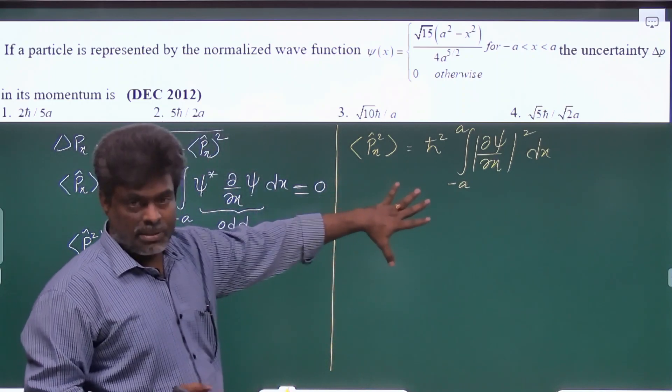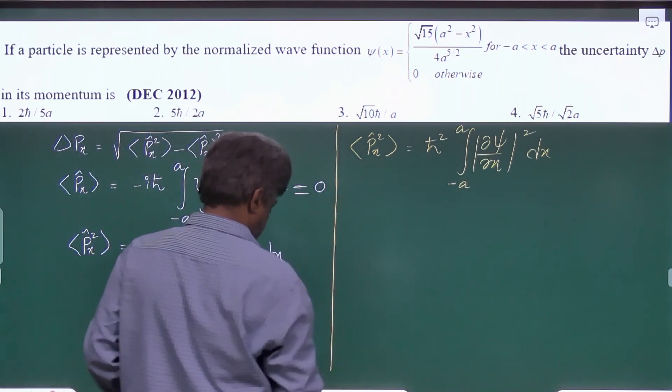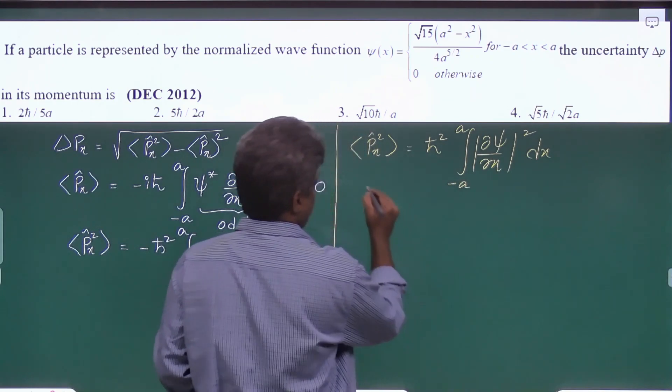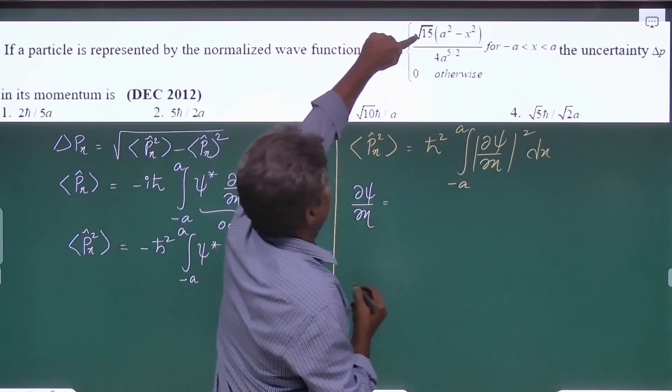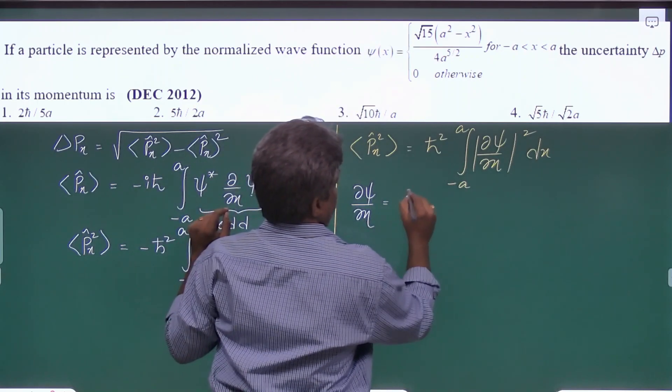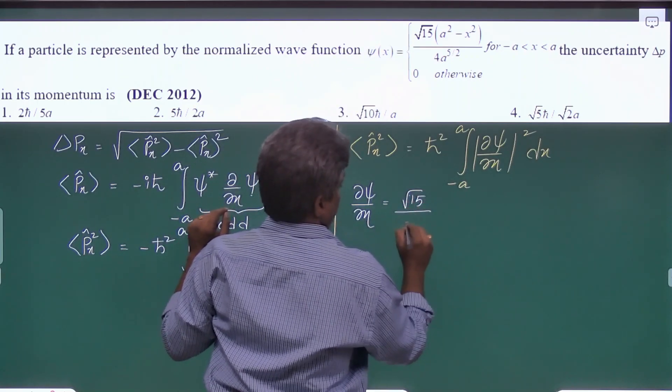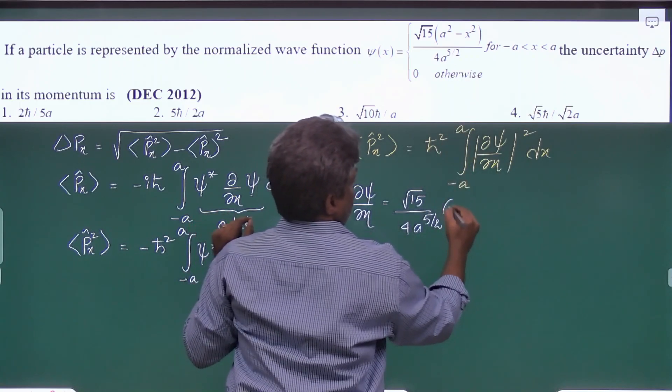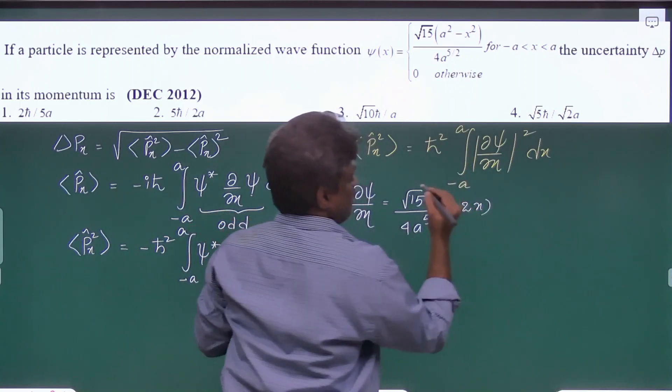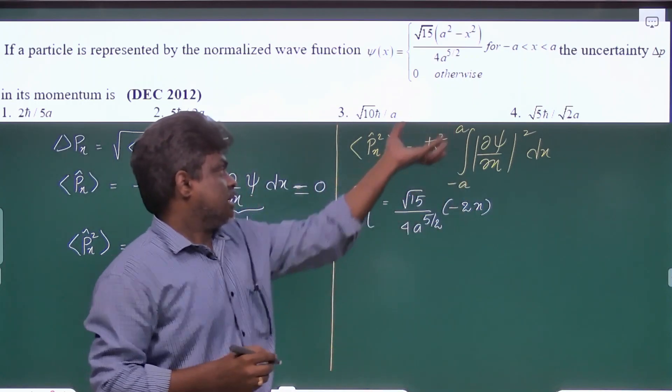If you use this it is very simple and just find d psi by dx here. d psi by dx, here is a constant that is root 15 by 4a power 5/2 and the differentiation of that with respect to x is minus 2x. Now take it and substitute.